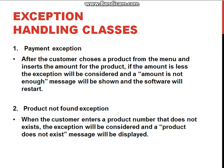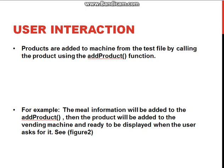Now let my partner Mahmoud explain the second part: user interaction and sequence diagrams. Products are added to the machine from the test file by calling the add product function from the class product. For example, the meal information is passed to the add product function, then the product is added to the vending machine and ready to be displayed when the user searches for it. Figure 2 explains the steps of this process in a sequence diagram.